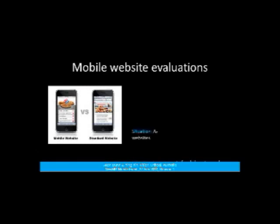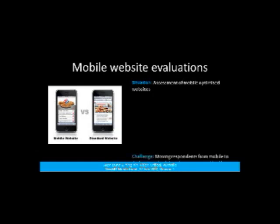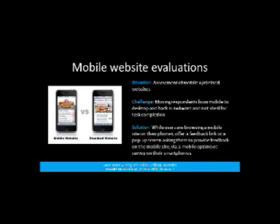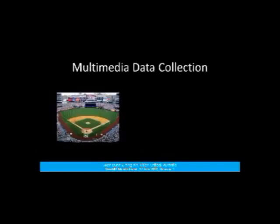The next example is a mobile website evaluation. The situation is that an assessment of a mobile-optimized website is required. Many companies now offer an optimized version of their website for mobile devices. The challenge is that moving respondents from mobile to a desktop and back is awkward and not ideal for task completion. The solution is to interrupt them while they're on their mobile device — via a pop-up screen or feedback link on the mobile website — and ask them to complete the survey right there on the same device they're viewing the mobile website from.